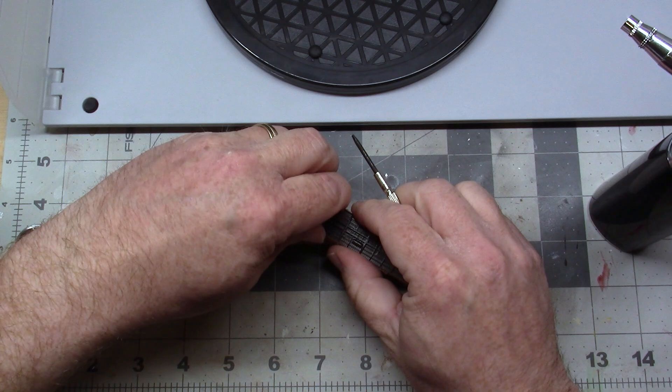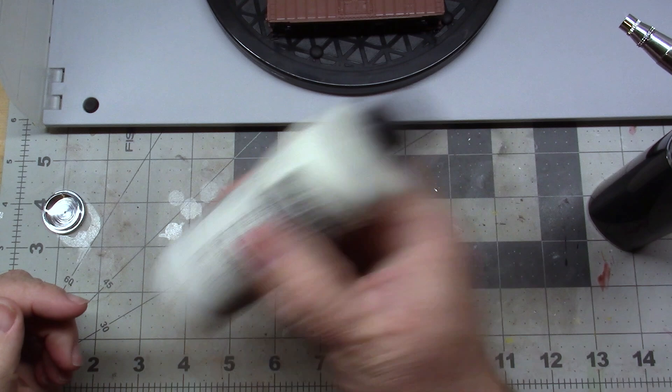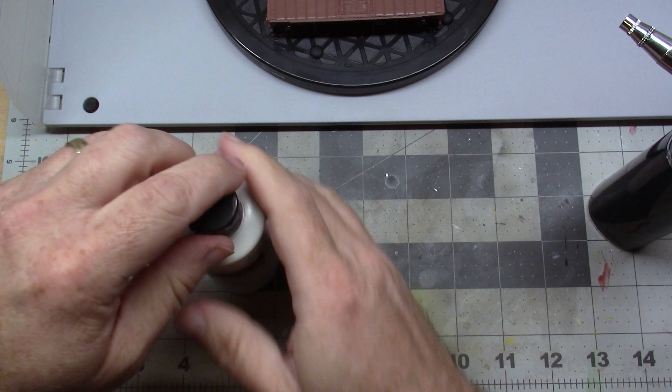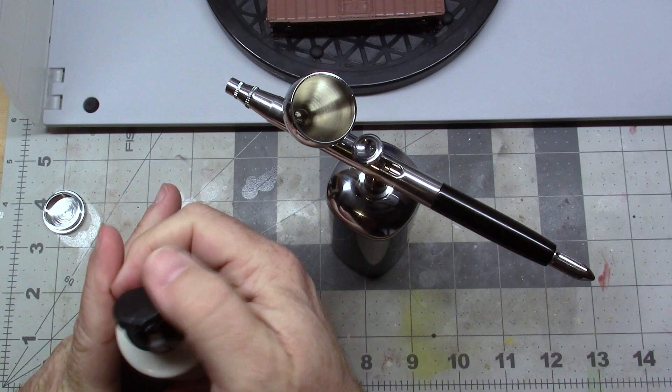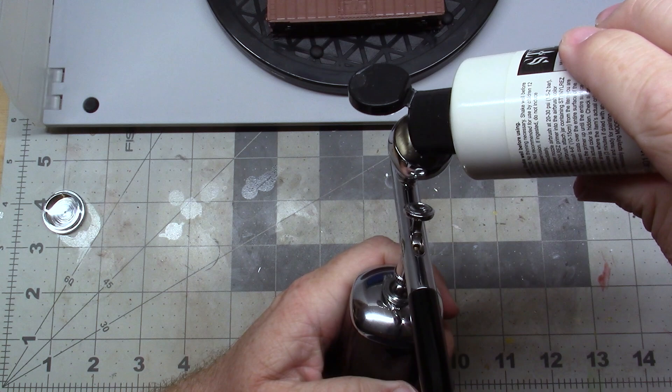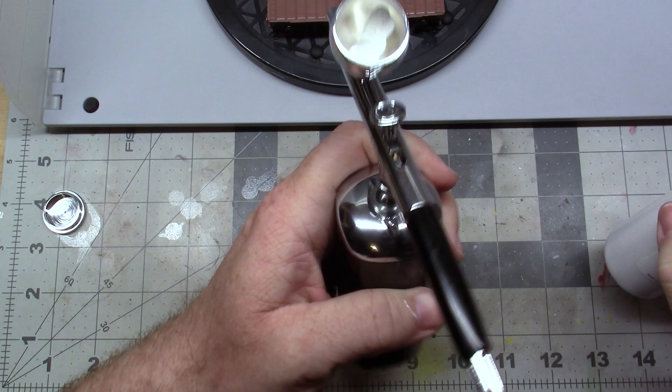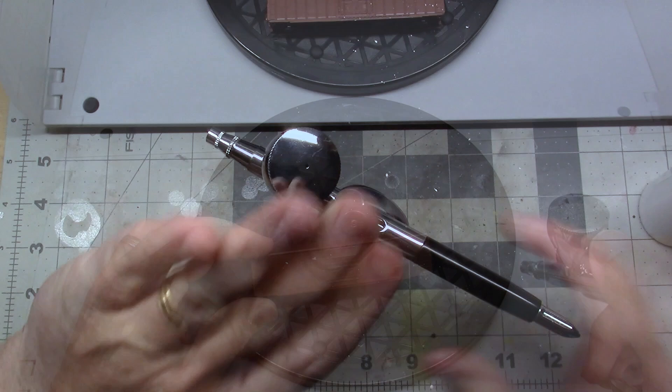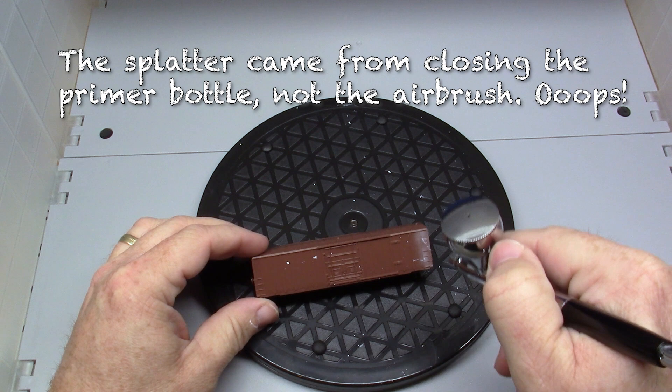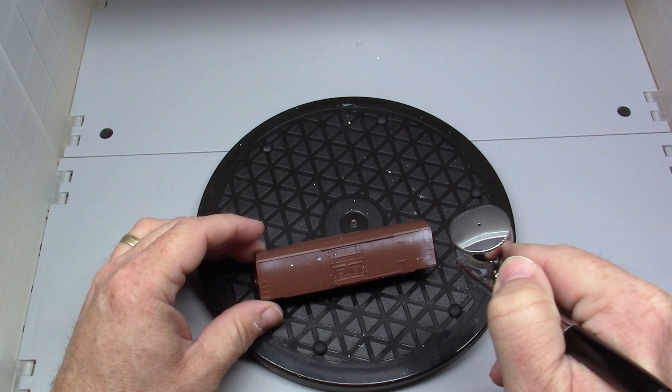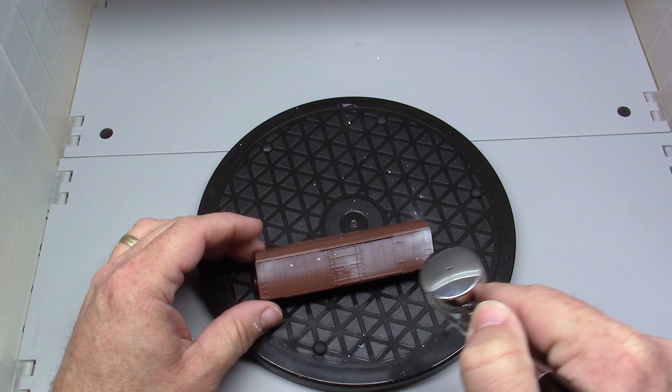The Stynylrez primer, just to put just a little bit into the cup. It's probably more than I need, but that's just into the cup, the lid on. And as you can see, almost right away, we've got a decent amount of spray. And this is just with the Stynylrez straight out of the bottle.